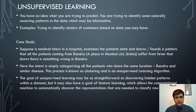In unsupervised learning, you have no idea what you are trying to predict — you are trying to identify naturally occurring patterns in the data. For example, suppose a medical intern examines patient data and finds a pattern that all patients coming from Bandra in Mumbai suffer from fever, suggesting something is wrong there. The intern is categorizing patients who share the same location and similar disease. This process is known as clustering and is an unsupervised learning algorithm. The goal may also include feature learning, allowing the machine to automatically discover representations needed to classify raw data.